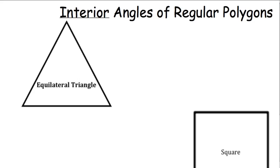The next lesson is about interior angles of regular polygons. This is kind of interesting and I want to show you a trick for figuring out the measurement of each interior angle. Regular polygons means each angle is the same measurement and each side length is also the same. We're going to talk about an equilateral triangle where every side length is the same and every angle is 60 degrees.